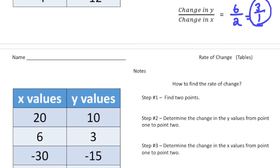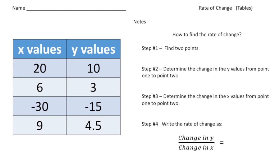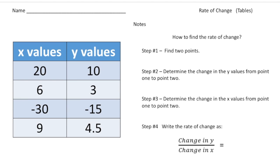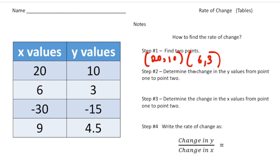Now let's try the next one. Here we have another x-y table — same process. Step one: find two points. Our first point is (20, 10) and our second point is (6, 3). Remember, I could use any two points — the first and third, or the last two — it doesn't matter.